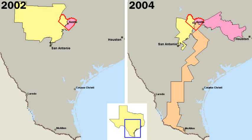The NAWSA then mobilized to obtain support state by state, and by 1920, the Nineteenth Amendment to the United States Constitution was ratified, giving women the right to vote. Student activism against the Vietnam War in the 1960s prompted the passage of the Twenty-Sixth Amendment to the United States Constitution, which lowered the voting age from 21 to 18, the legal age of the draft.